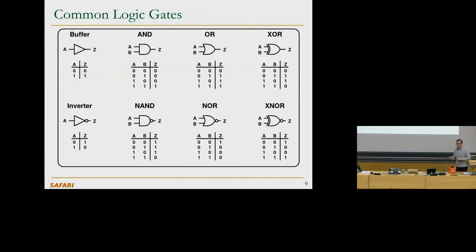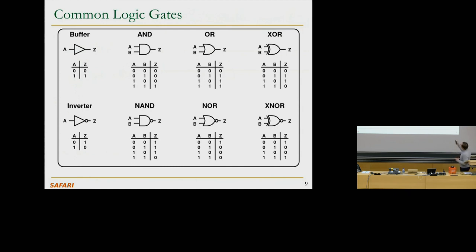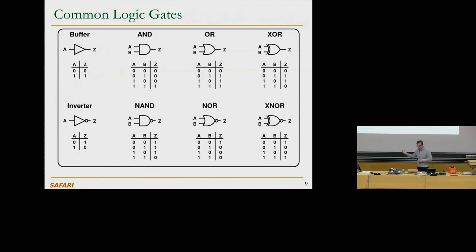XOR is another interesting gate. This is exclusive OR. The XOR function is true if an odd number of the inputs is 1. For a two-input XOR: if A is 0 and B is 1, or A is 1 and B is 0, you get a 1. Expressing this as a Boolean equation: A-bar AND B, OR A AND B-bar. XOR-bar (XNOR) is the complement of XOR, and you can imagine that's easier to build.